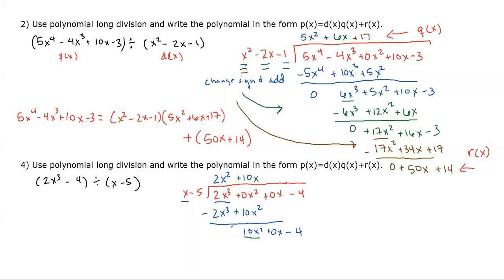Next step: something times x gives 10x², which is 10x. So 10x · x = 10x², and 10x · (−5) = −50x. Change signs and add — the square term cancels, and we're left with 50x − 4.